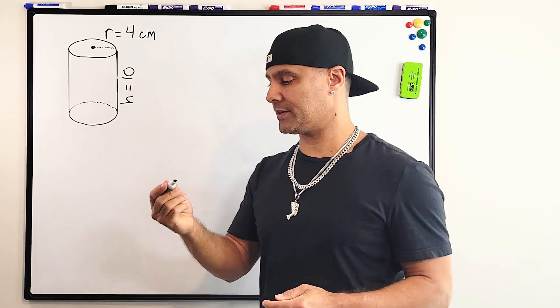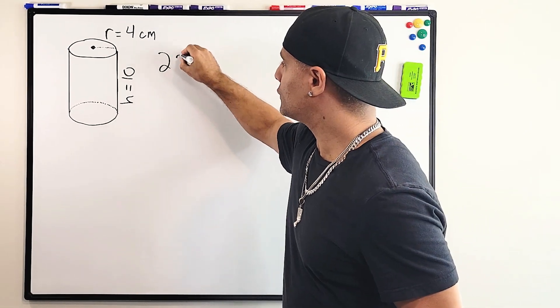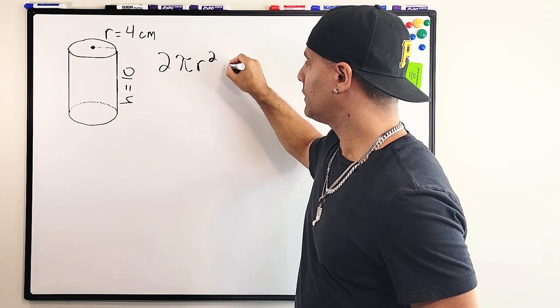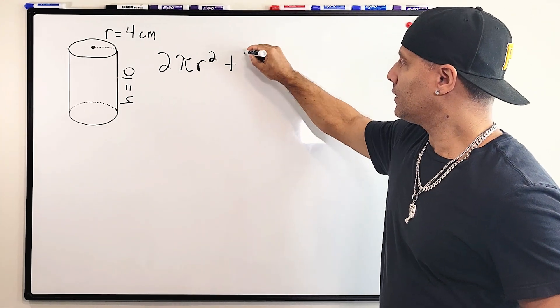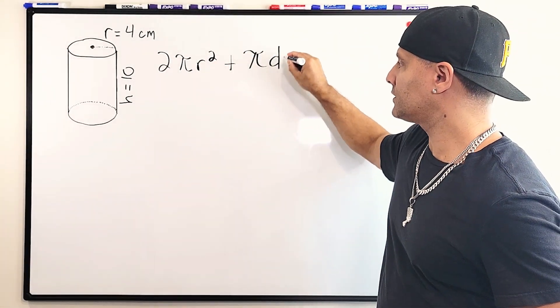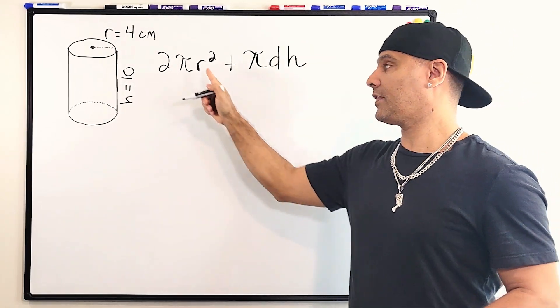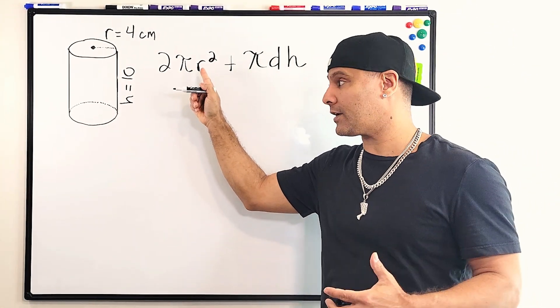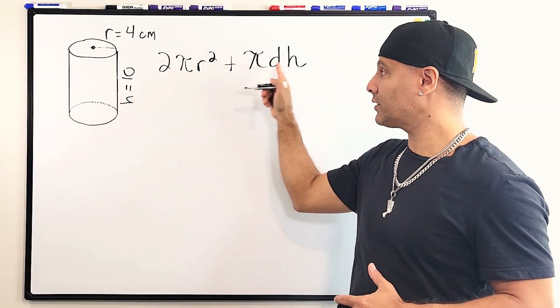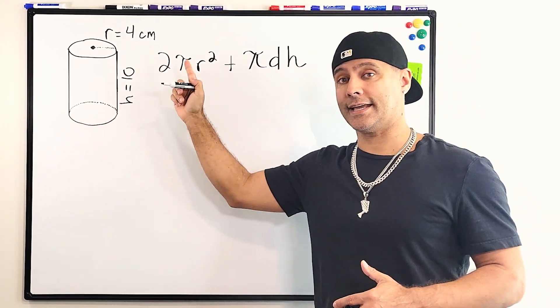And that can be represented by the formula 2πr² plus π times diameter times the height of the cylinder. Now this part of our formula will give us the area of the two circles and this part of the formula gives us the area of the rectangular side.